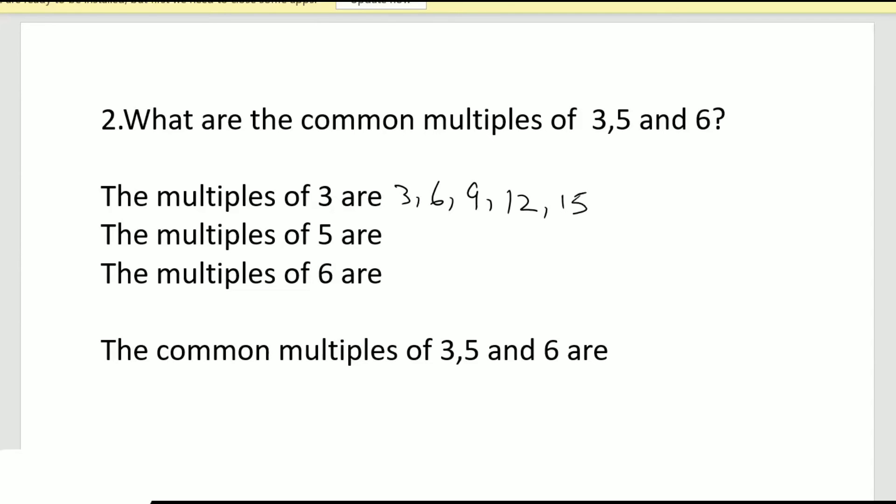Multiples of 5 are 5 times 1 is 5, 10, 15, 20, 25, 30, 35. Multiples of 6 are 6, 12, 18, 24, 30, okay. Now let's see what are the common multiples of 3, 5, and 6.